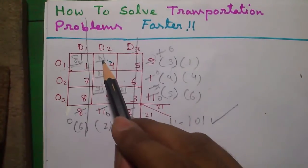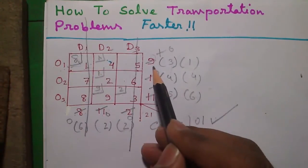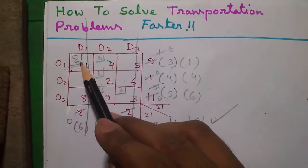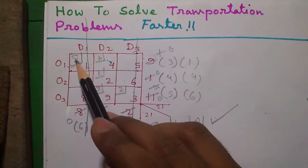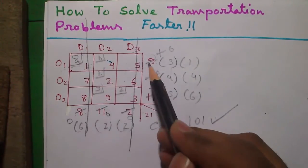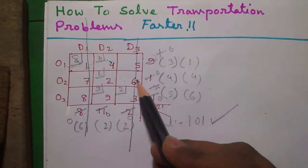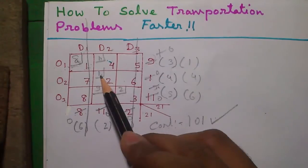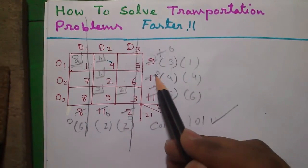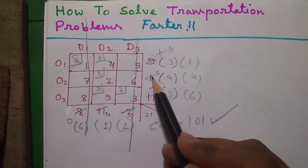We can verify this result by checking individual rows and columns. So for row 1 our total allocation value is 8 plus 1, which is 9, which is equal to the total supply for row 1. Similarly for row 2 our total allocation value is 1 which is equal to total supply for row 2.